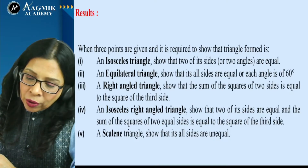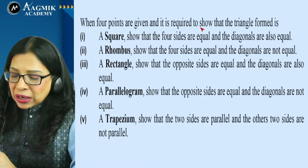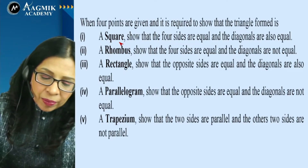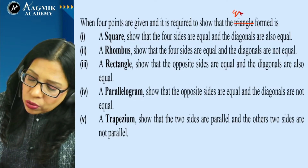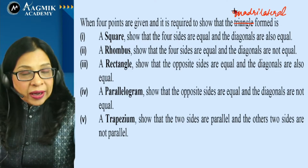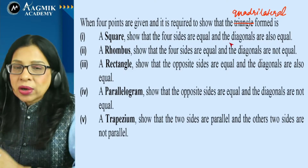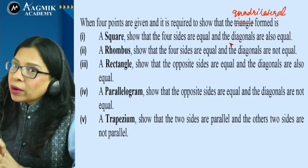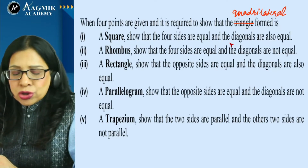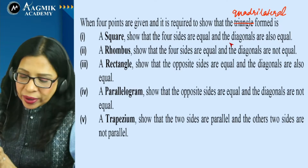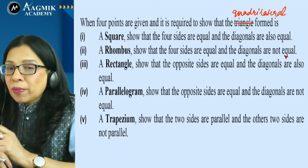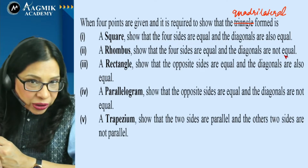For a rhombus, all four sides are equal but diagonals are not equal in length; however, diagonals bisect each other and are perpendicular. For a rectangle, opposite sides are equal and parallel, and diagonals are also equal — but diagonals are not perpendicular. For a parallelogram, opposite sides are equal and diagonals bisect each other but are not equal. For a trapezium, two sides are parallel and the other two are not.